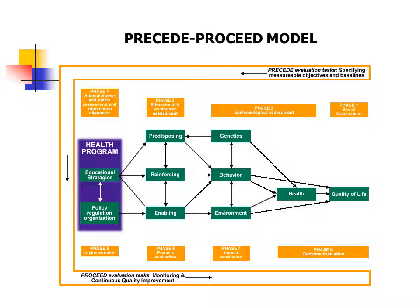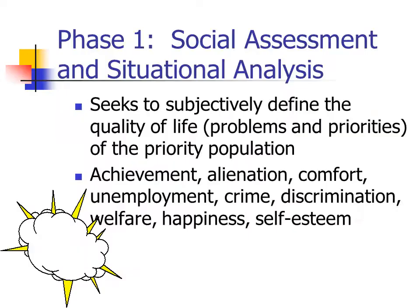Finally, at the bottom of the model there are four more phases. Phase five is implementation — after we determine our intervention strategies, we implement those. Then the next three all have to do with evaluation. There are three types: process evaluation, impact evaluation, and outcome evaluation. This tells you how important evaluation is — if you've got three phases devoted to it, it must be a big deal.